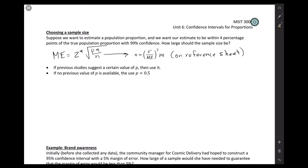If there was a previous study, like a pilot study, that suggests a certain value of P, go ahead and use whatever the pilot study says. But if there was no previous value of P available, then you're going to use 0.5. The reason that we use P equals 0.5 is that actually leads to the largest possible standard error.